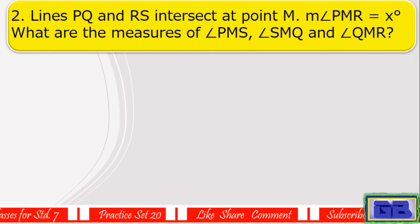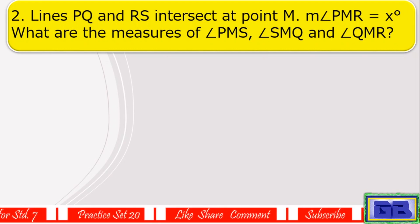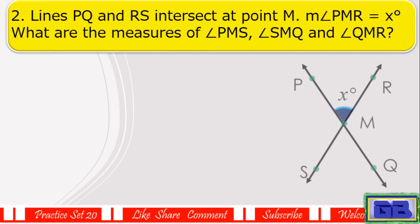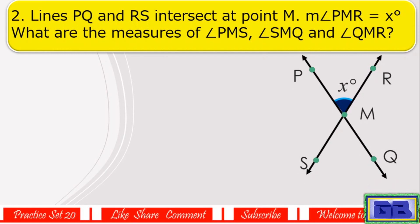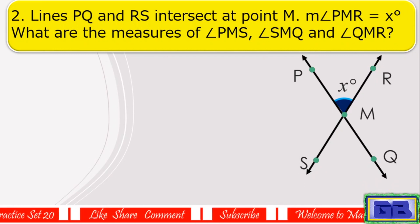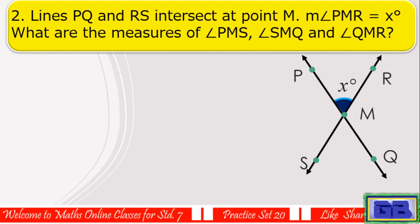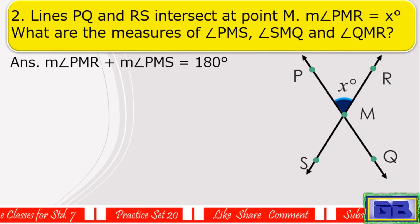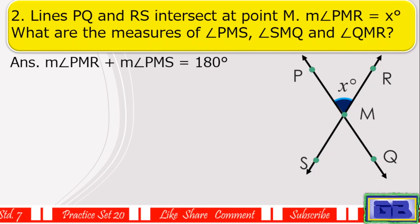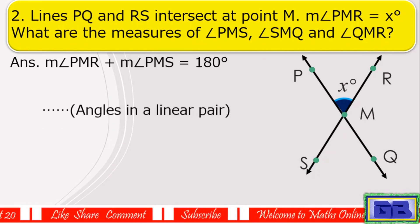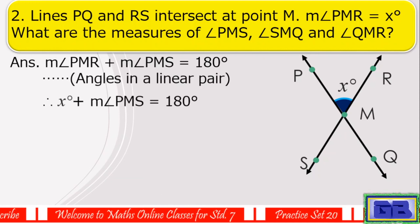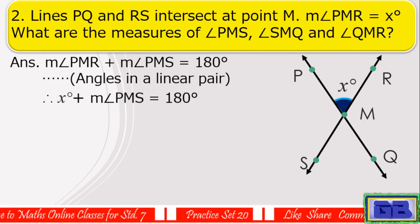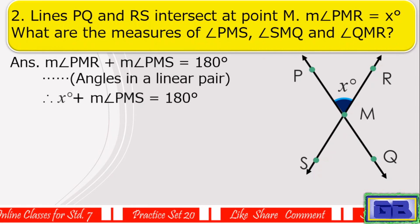Question number two: Lines PQ and RS intersect at point M. Measure of angle PMR equals x degrees. What are the measures of angle PMS, angle SMQ, and angle QMR? Answer: Measure of angle PMR plus measure of angle PMS equals 180 degrees, because these are angles in a linear pair. Therefore, x degrees plus measure of angle PMS equals 180 degrees.